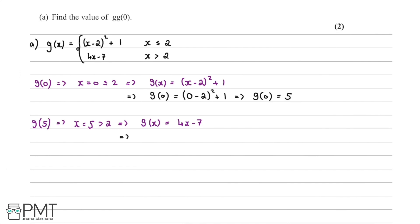So g of g of 0 equals 4 times g of 0 minus 7, which is 4 times 5 minus 7. Since 4 times 5 is 20, we subtract 7, giving us the final answer: g of g of 0 is equal to 13.